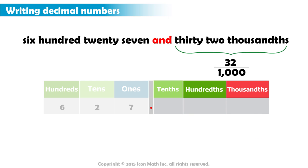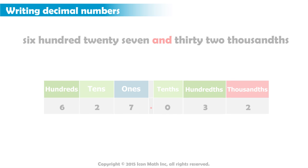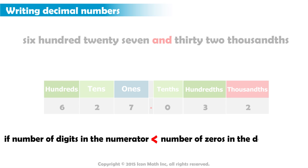To get the correct value, we should write a zero, and then 32. The general rule for this is that if the number of digits in the numerator is less than the number of zeros in the denominator, then we should write zeros to the left of the decimals until the total number of digits is equal to the number of zeros in the denominator.